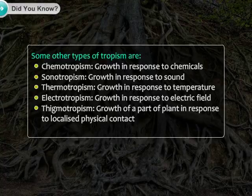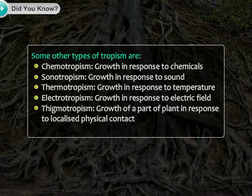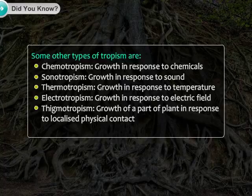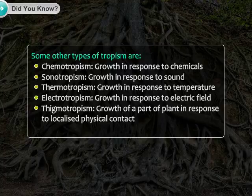Did you know? Some other types of tropisms are: 4. Chemotropism — growth in response to chemicals; 5. Sonotropism — growth in response to sound; 6. Thermotropism — growth in response to temperature; 7. Electrotropism — growth in response to electric field; and Thigmotropism — growth of a part of a plant in response to localized physical contact.